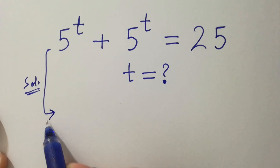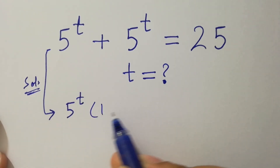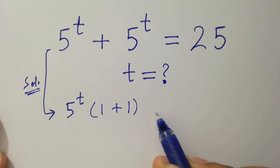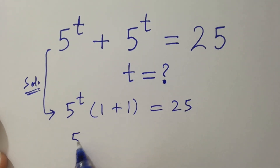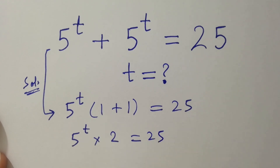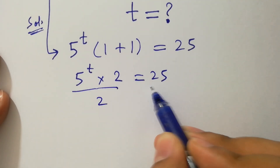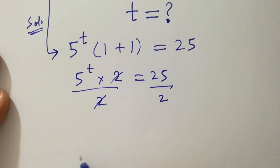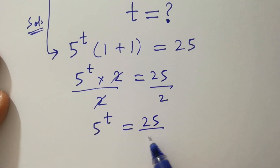Here, 5 to the power t can be common. We have 5 to the power t times (1 plus 1) equal to 25. Since 1 plus 1 is 2, we get 5 to the power t times 2 equal to 25. Dividing by 2 on both sides, the 2's cancel, giving 5 to the power t equal to 25 over 2.